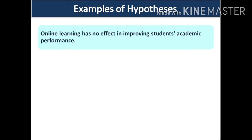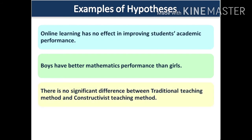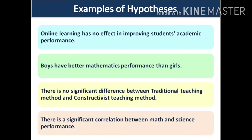We can also have: online learning has no effect in improving students' academic performance. We can also have a claim: boys have better mathematics performance than girls. We also have: there is no significant difference between traditional teaching methods. And one can also hypothesize that there is a significant correlation between math and science performance. All of these can be proven or tested through experiment or investigation.